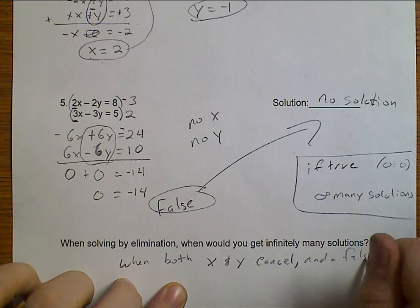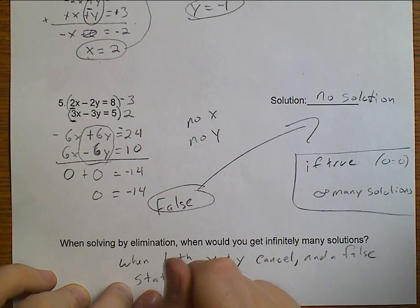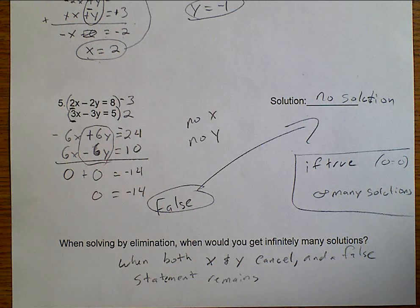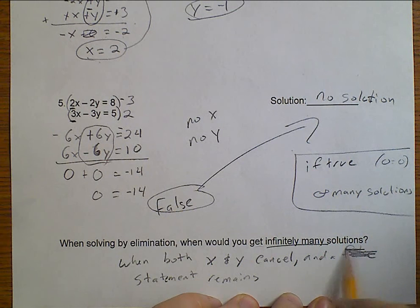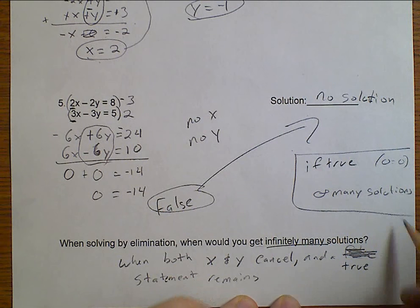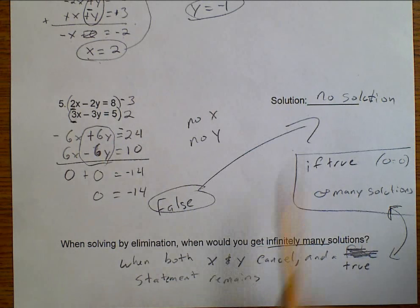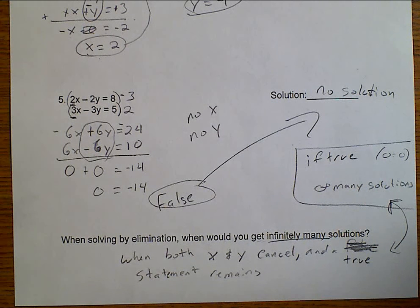So, this one is, in fact, no solution. But, I wanted to make sure that you were aware that if you do get it to be true, you'll have infinitely many solutions. Which, I've just answered this last question. When solving by elimination, when you get infinitely many solutions? When both X and Y cancel and a true statement remains. So, no solutions is a false statement. Infinitely many is a true statement.